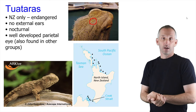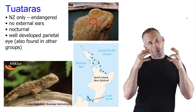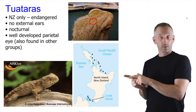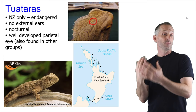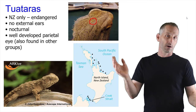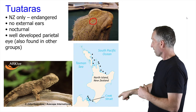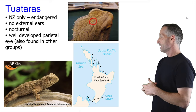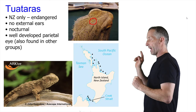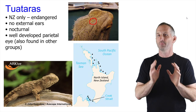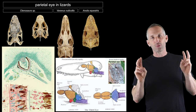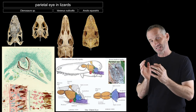Tuataras are a lizard-like old branch off the reptile tree found only in New Zealand. They're highly endangered because when mammals became invasive on the mainland of New Zealand, they wiped out all the tuataras. Now tuataras are found only on small islands off the coast of the North Island. They're nocturnal, lack external ears, and have a well-developed parietal eye — essentially a third eye mainly thought to sense general light levels linked to photoperiodic schedules such as the day-night cycle.